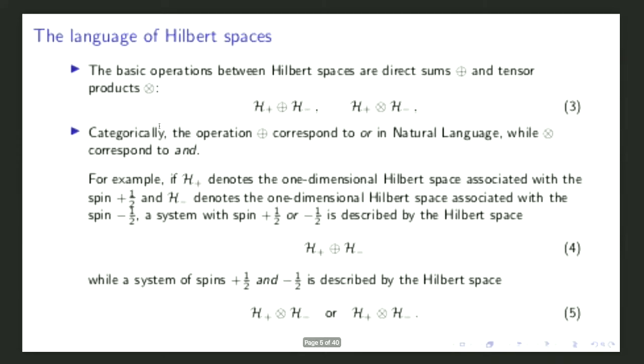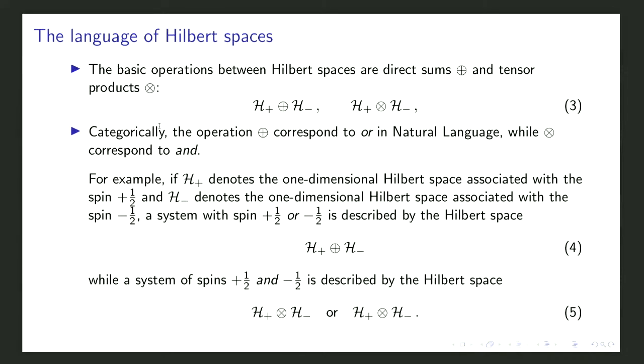The language of Hilbert spaces has two basic operations: direct sums and tensor products. The direct sum corresponds to the word 'or' in natural language, and the tensor product corresponds to 'and'. For example, if H+ denotes the one-dimensional Hilbert space for spin +1/2 and H− for spin −1/2, a system with spin +1/2 or −1/2 is described by the direct sum, whereas a system with spin +1/2 and −1/2 is described by the tensor product.